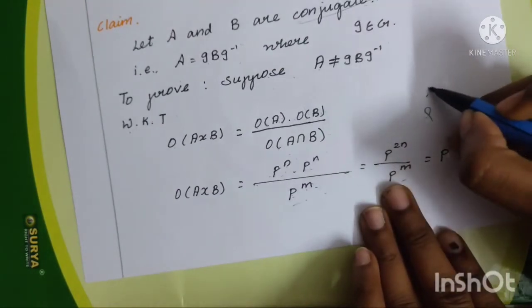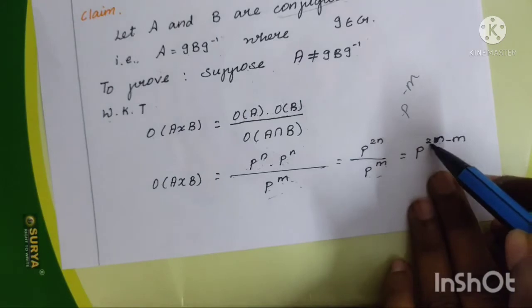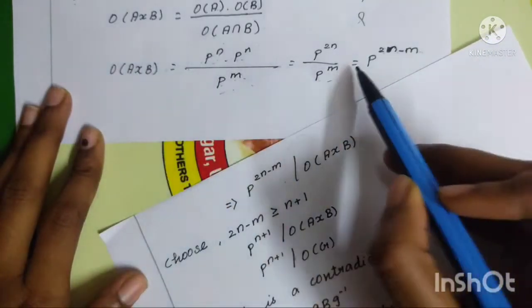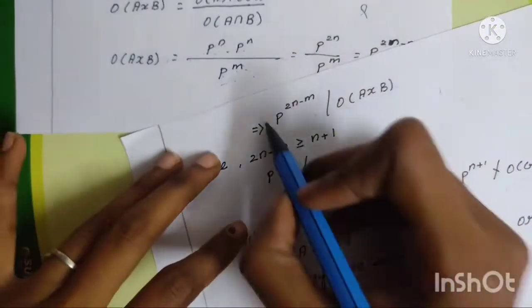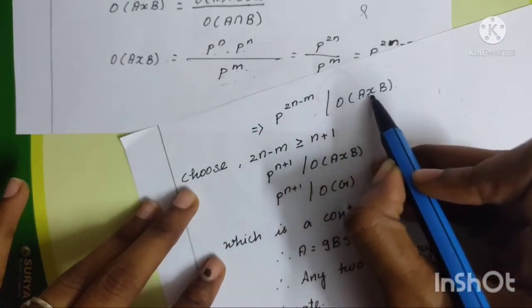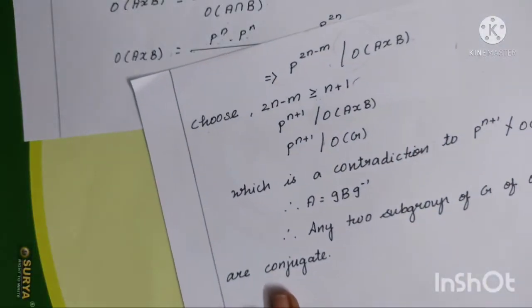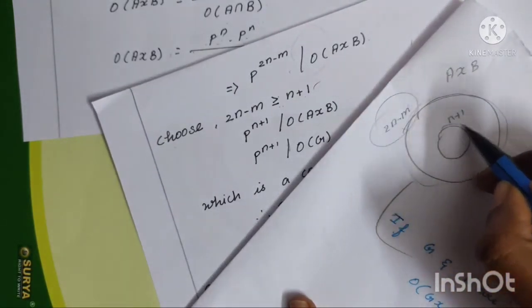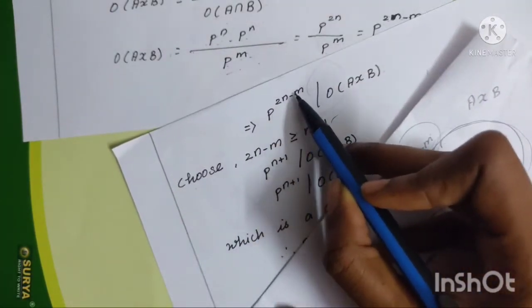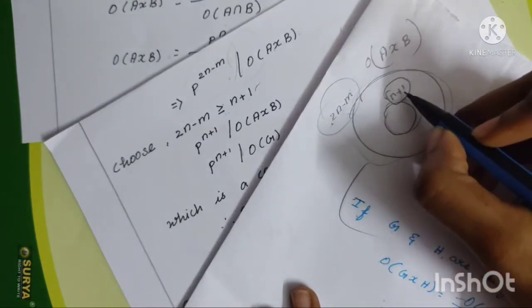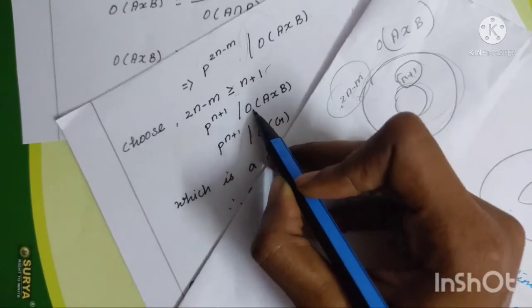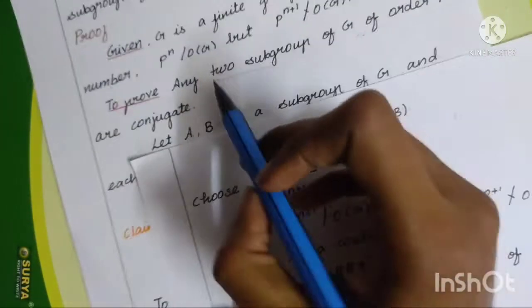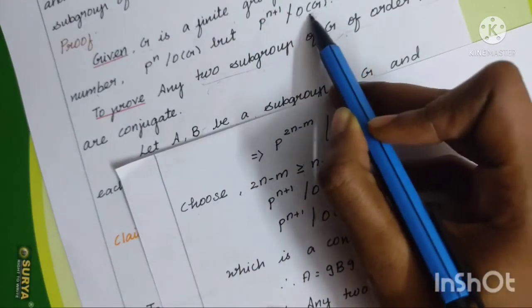Order of A equals P power n, order of B equals P power n, and order of A intersection B equals P power m. So order of AB equals P power n times P power n divided by P power m, which gives P power 2n minus m. Therefore P power 2n minus m divides order of AB. Since AB is contained in G, P power 2n minus m divides order of G.